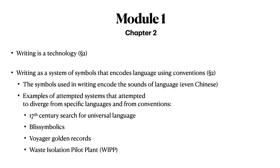In Chapter 2, we explored in depth examples of attempted systems that tried to diverge from some specific languages and away from convention. We explored the 17th century search for universal language and its modern counterpart in Bliss Symbolics. We looked at the Voyager program and the golden records that accompanied those spacecraft, and the waste isolation pilot plant and its attempt to communicate with people up to 10,000 years in the future.